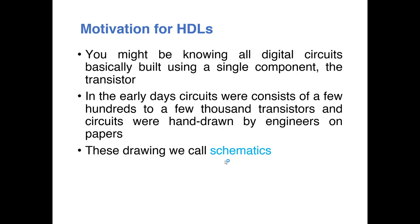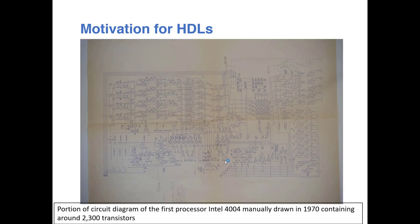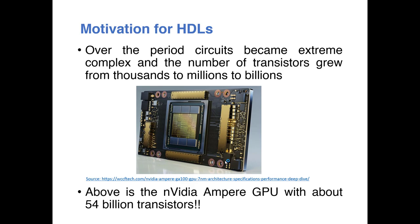In the early days, digital circuits contained a few thousand transistors and they were mainly hand-drawn by engineers on sheets of paper. These hand-drawn circuit diagrams we call schematics. For example, this is the schematic of the first processor, the Intel 4004, which was designed in 1970. It contained only around 2300 transistors with only four sheets of schematic. Now, what you are seeing here is a Nvidia Ampere GPU - as of 2020, this chip holds the record for the GPU with the most transistors, about 54 billion.